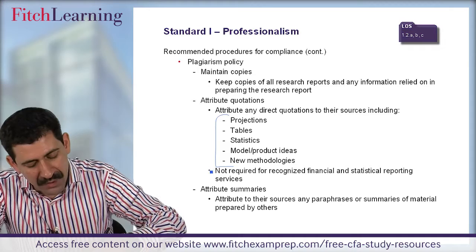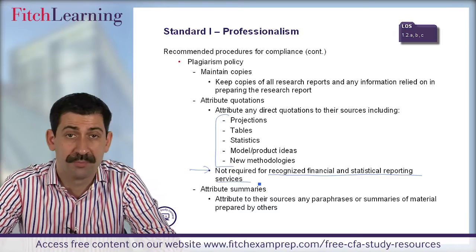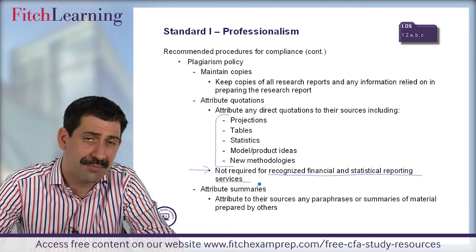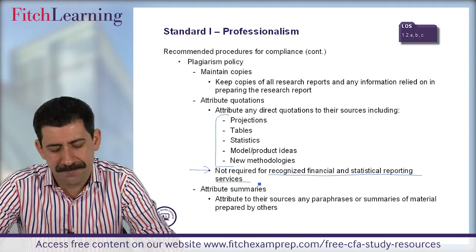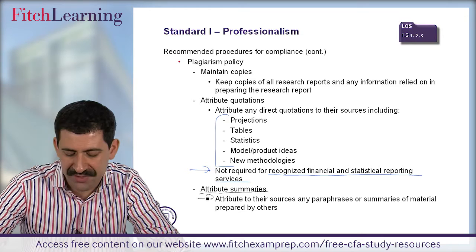Standard 1C also covers plagiarism. Recommendations for complying with the plagiarism policy include maintaining copies of all research reports and any information relied on in preparing the research report. Attribute any direct quotations to the original source — this is inclusive of projections, tables, statistics, model or product ideas, and new methodologies that come from others. Note this is not required for recognized financial and statistical reporting services; for example, price data from Bloomberg is widely available information that does not necessarily need to be attributed.